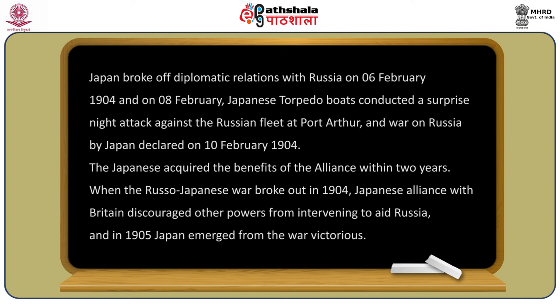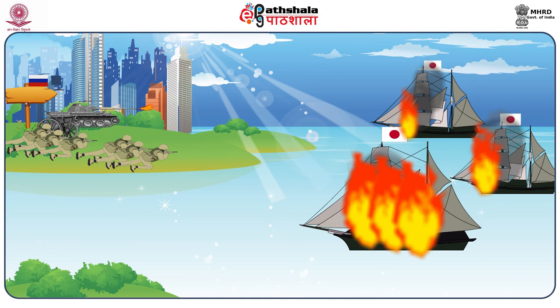Japan broke off diplomatic relations with Russia on 6 February 1904. On 8 February, Japanese torpedo boats conducted a surprise night attack against the Russian fleet at Port Arthur, and war on Russia was declared on 10 February 1904. The Japanese acquired the benefits of the alliance within two years: when the Russo-Japanese War broke out in 1904, Japan's alliance with Britain discouraged other powers from intervening to aid Russia, and in 1905 Japan emerged from the war victorious.